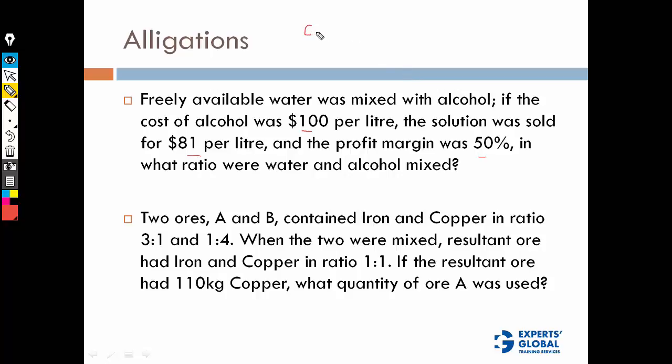Cost plus profit equals sales. Profit is 50% of cost. If C is the cost, 0.5C is the profit per liter and sales is $81. So 1.5C = 81, therefore C = 54.